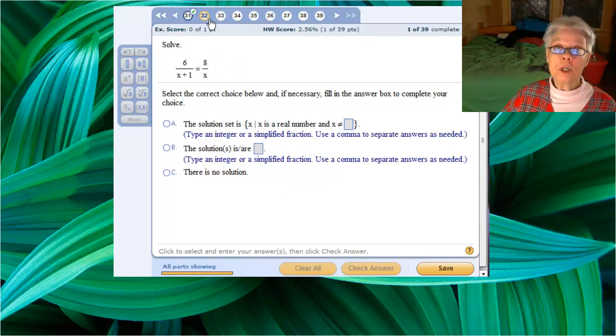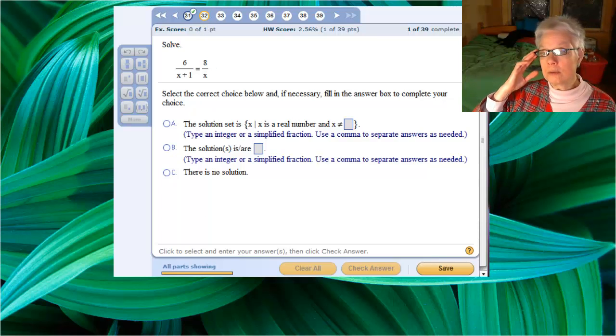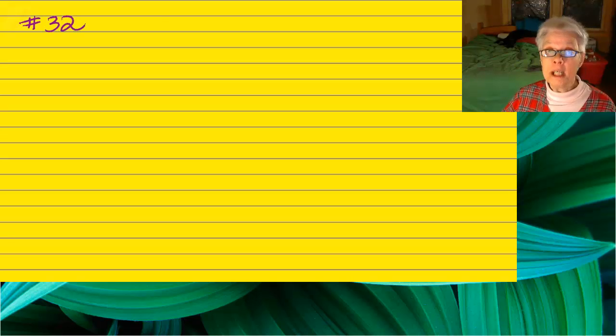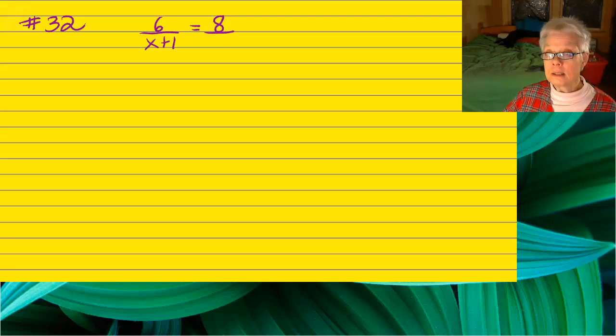And we're going to move along to number 32. It's also a rational equation, though solving it will probably be a little easier than the other one because there are fewer denominators. So we'll have 6 over x plus 1 equals 8 over x. Again, we need an LCD that will cancel out the two denominators. We'll need an x and an x plus 1.